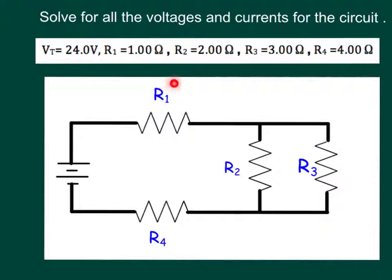We need to know the voltage across resistor R1 and the current through it, the voltage across R2 and R3 and the current going through each of those, the voltage across R4 and the current going through R4. So we need to know everything there is about the circuit.